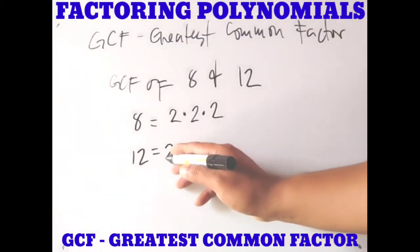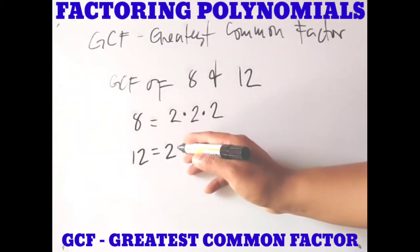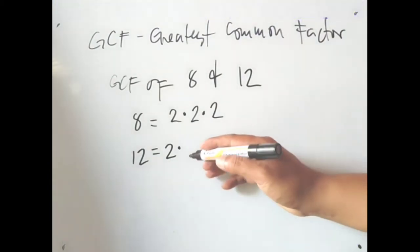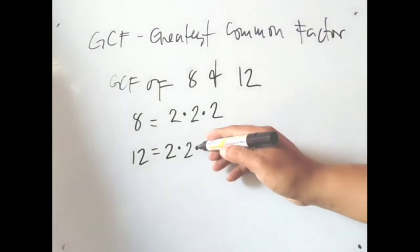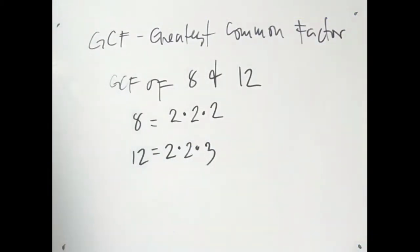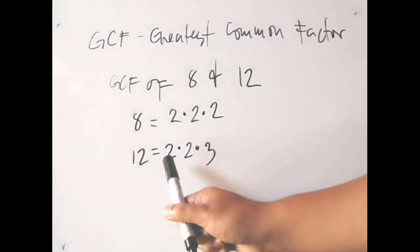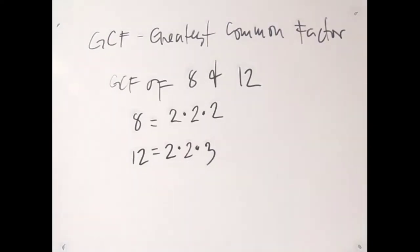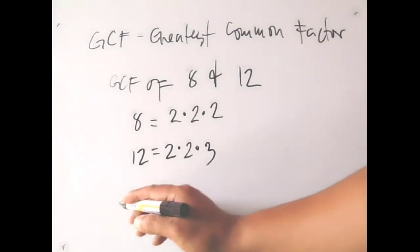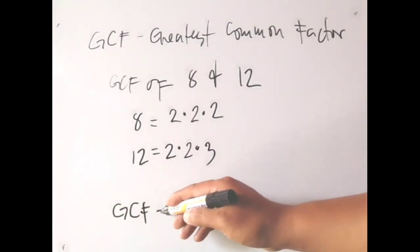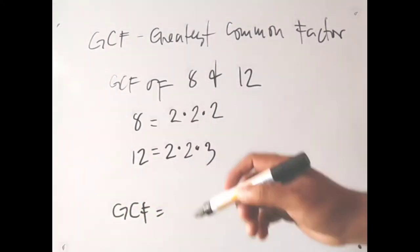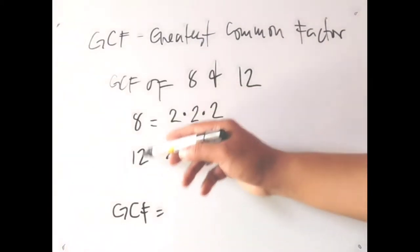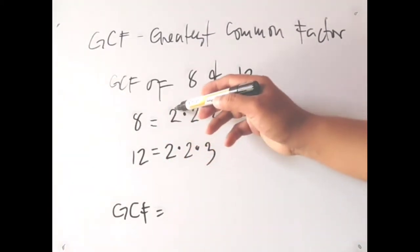Now get the prime factors of 12. The prime factors of 12: 12 is 2 times 6, and the prime factors of 6 are 2 times 3, so 12 is equal to 2 times 2 times 3. To get the GCF, you simply find the common factors of the two numbers.